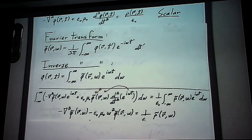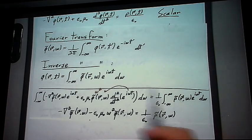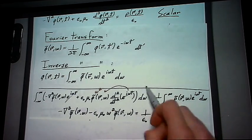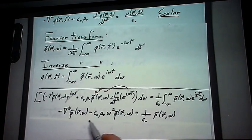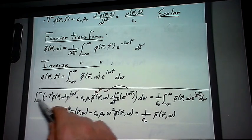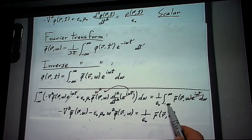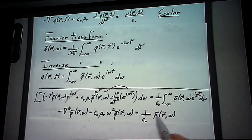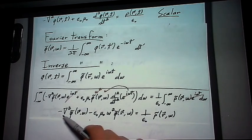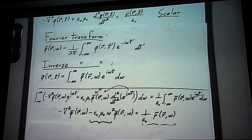And so this is what you end up with after canceling the exponentials and saying that since the integrals are equivalent, then also the integrands will be equivalent, and you end up with an ordinary differential equation.